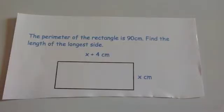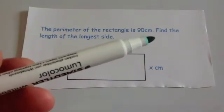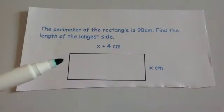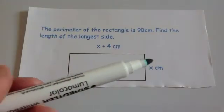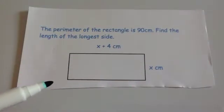In this video we're going to be looking at forming and solving equations whenever you're dealing with geometry — in this case angles and perimeter. The first question says the perimeter of a rectangle is 90cm. Find the length of the longest side. So the perimeter, the distance around the outside, is 90cm.